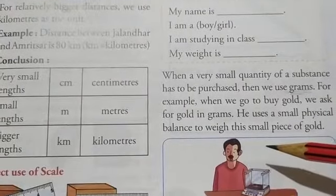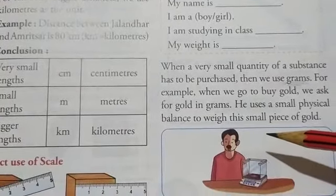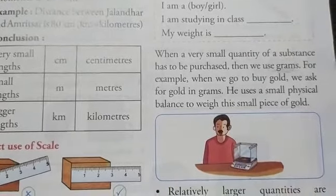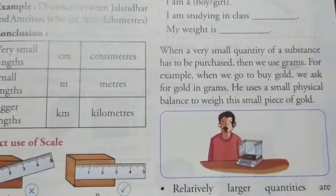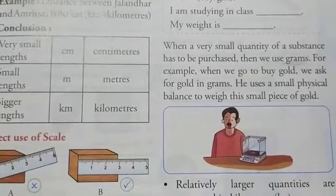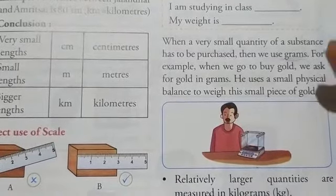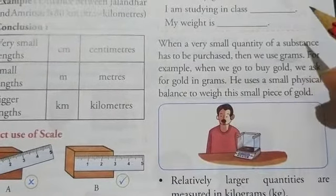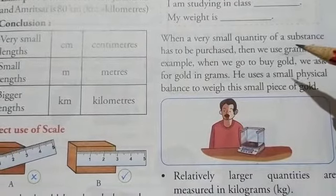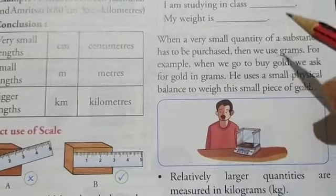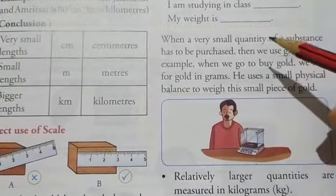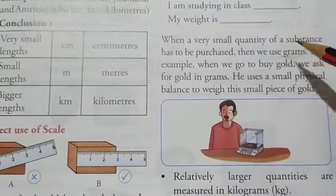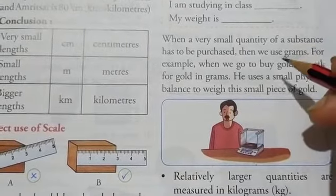Next is the units for the measurement of mass or for the measurement of weight. So there are different units used for the measurement of weight like kilograms, grams, milligrams, tons, quintals. And these are used according to the requirement. For example, whenever we have to measure the weight of small quantity of a substance, then we use grams.